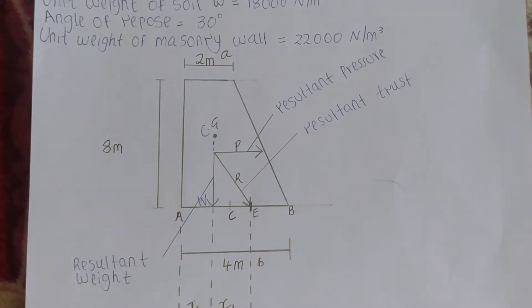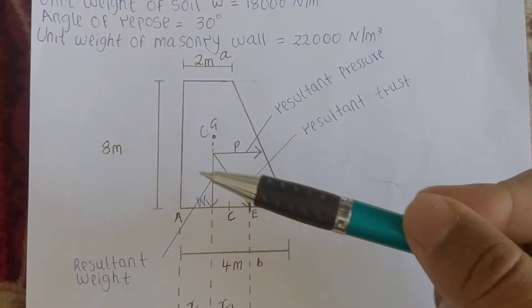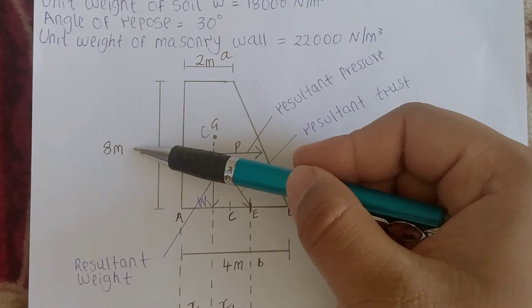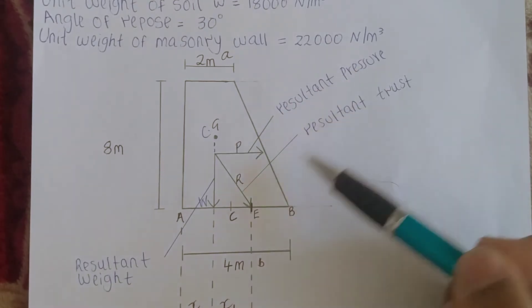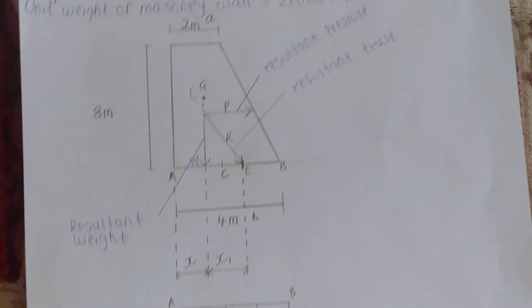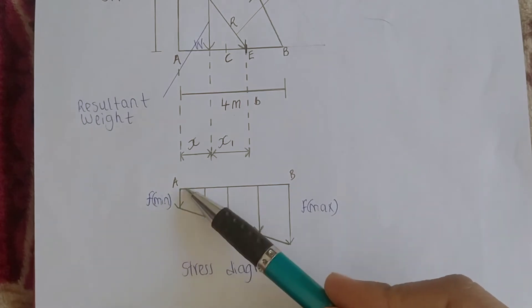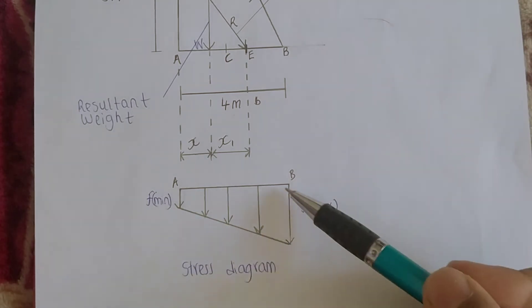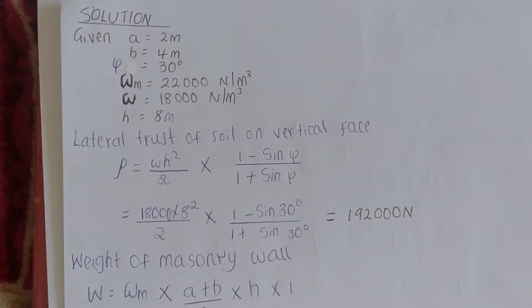Here is a sketch: the top is two meters, the base is four meters, and the height is eight meters. P is the resultant pressure, R is the resultant thrust, and W is the resultant weight. You can also see the stress diagram — at point A the pressure is minimum, and as we move towards B the pressure increases, so at B the pressure is maximum.